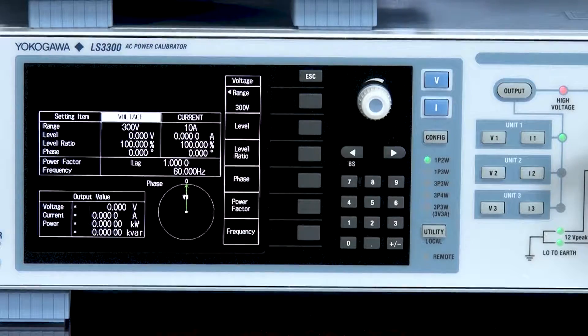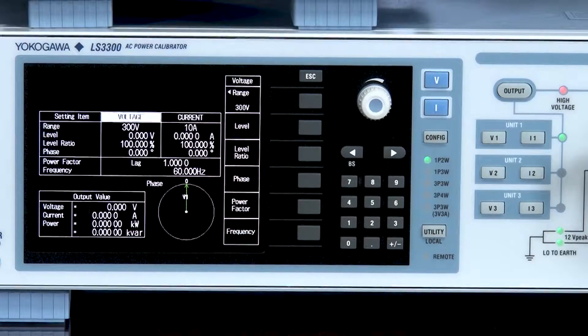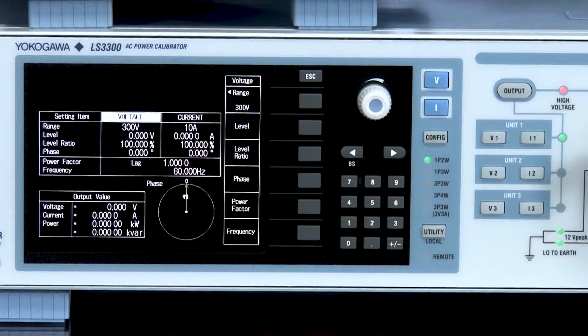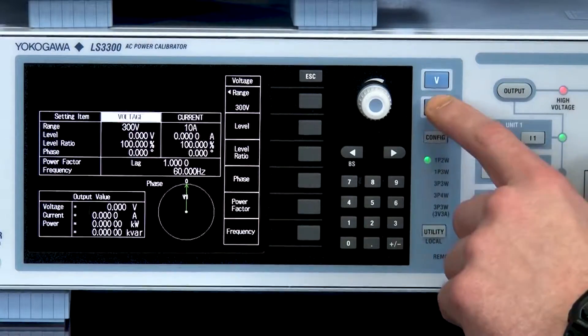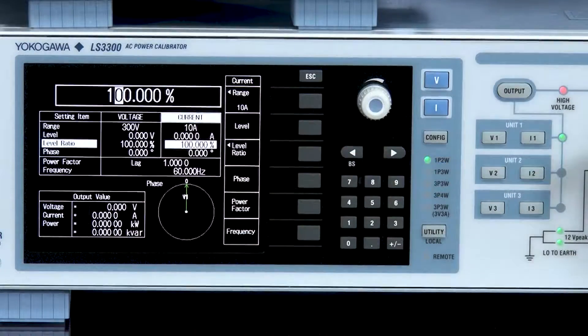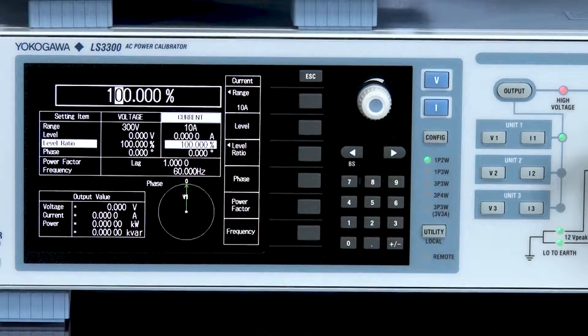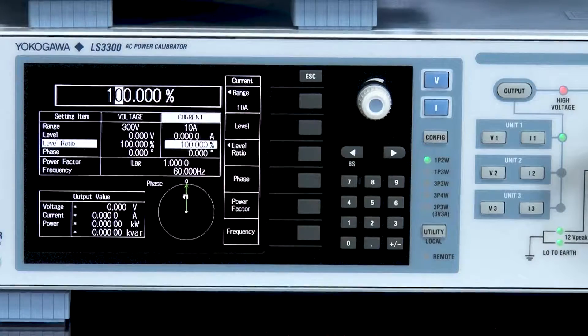We will conduct the accuracy test using the five point method. To perform the five point test we will use the level ratio. The level ratio can be found under voltage or current, which allows you to set the current or voltage level in units of percentage of the range.